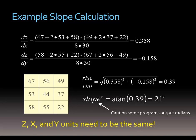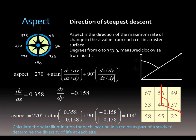We have a little caveat about the units being the same. Aspect is a little bit more complicated, but we're still using the same sort of calculation looking at the center cell. It's the direction of change of the z value — which way the slope is facing, basically. It's measured in degrees, 0 to 360 measured clockwise from north.